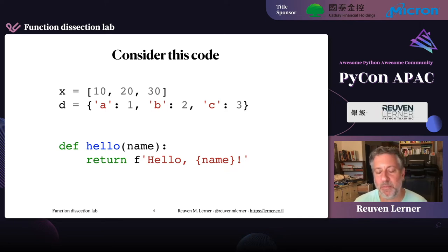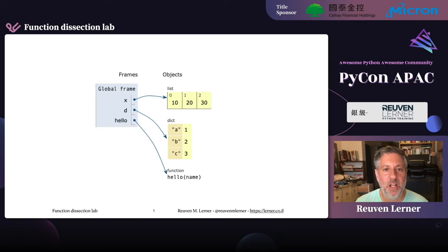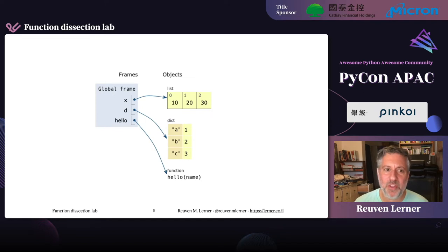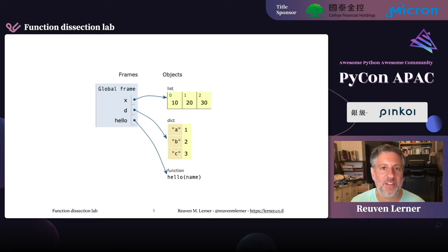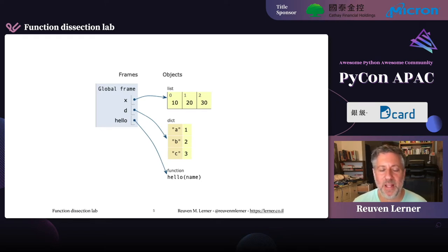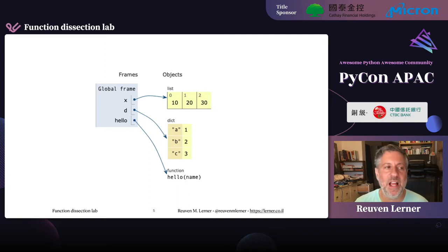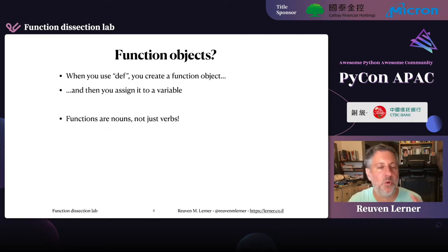It's an amazing site by Philip Guo and a few other people. When we pop this code into the Python Tutor, we see that x is a list, d is a dictionary, and hello is a function. Notice that x, d, and hello are all variables — all global variables. We know that when we assign [10, 20, 30] to x, we have a list assigned to the global x. When we have a dict assigned to d, we have a global variable d. But it's not always obvious that functions, when we define them, are variables also.